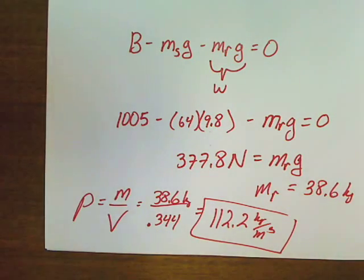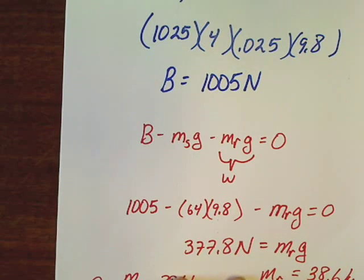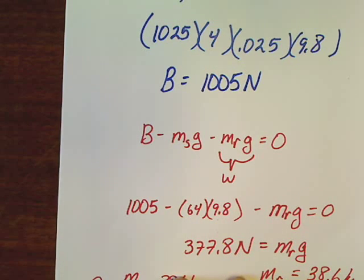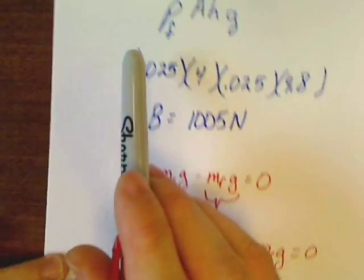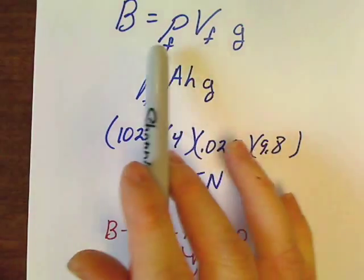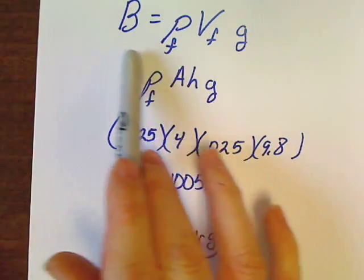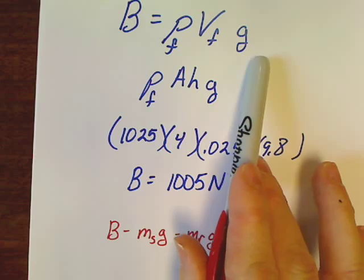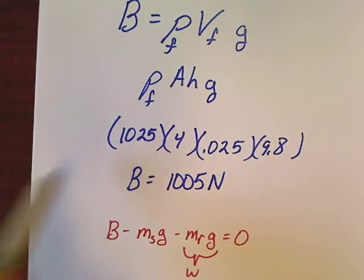There's actually a part F, but I don't consider it super important. It wants you to go back and find B if the raft was completely submerged. If the raft was completely submerged, it would just be the same equation, except you just plug in the volume of the object.